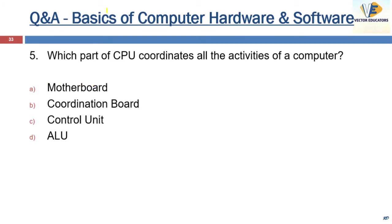The next question: which part of the CPU coordinates all the activities of a computer? The correct answer is the control unit. We have already studied this in lecture 1 in the von Neumann architecture — the CPU comprises ALU, CU, and memory. Do not confuse the CPU with the system casing; the system casing houses the motherboard, SMPS, hard disk, and so on.